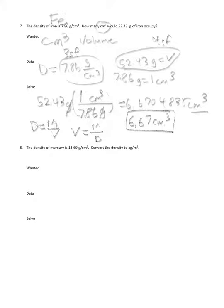So either way will work out fine. The advantage of this three-step approach is if you've forgotten the formula, you can still wind up with the right answer by using your units correctly. Next problem: the density of mercury is 13.69 grams per cubic centimeter. Convert the density to kilograms per meter cubed. Kilograms per meter cubed is what we're after. Our data is 13.69 grams per cubic centimeter.